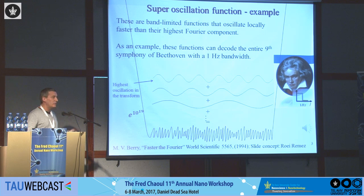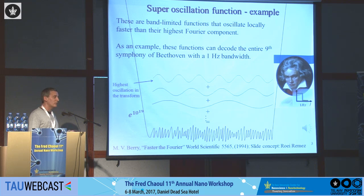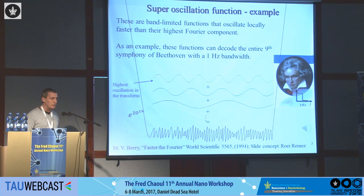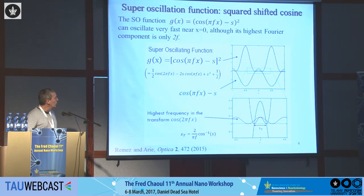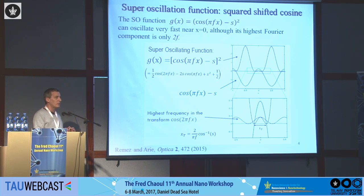This is not a very efficient way to transmit symphonies of Beethoven — the efficiency is 1 over a very large number. But nevertheless, it can work. I'll show a simpler example of a super-oscillating function that we can also realize in the lab.